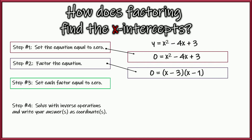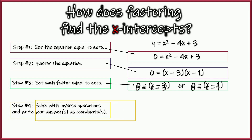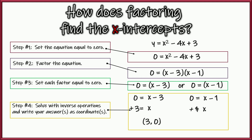Now set each factor equal to zero. For x minus 3 equals zero: add 3 to both sides, getting x equals 3, giving the coordinate (3, 0) as our x-intercept. For x minus 1 equals zero: add 1 to both sides, getting x equals 1, giving the coordinate (1, 0). After just a few problems, you can get really fast at this and do them in your head. Those are our four steps — we've got our x-intercepts.